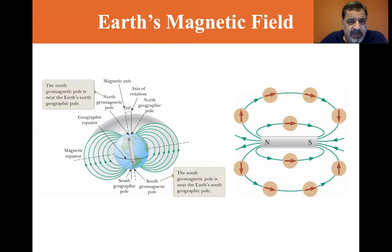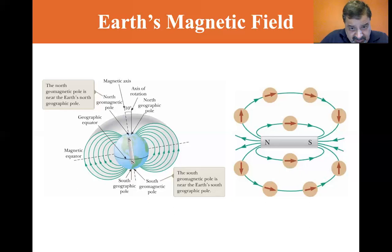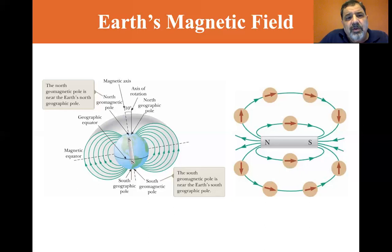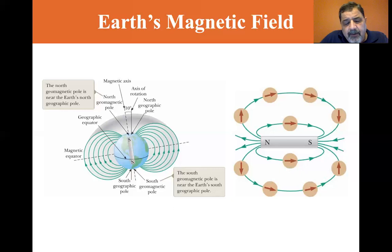The north geomagnetic pole is near the Earth's north geographic pole, and the south geomagnetic pole is near the Earth's south geographic pole. But look at the bar magnet superimposed on the Earth's magnetic field — there's a south pole at the north magnetic pole. So the north geographic pole, the north geomagnetic pole, has a slight deviation, but it is a south pole at the north geomagnetic pole.